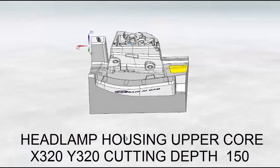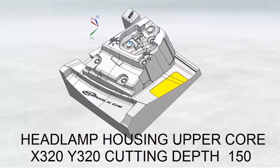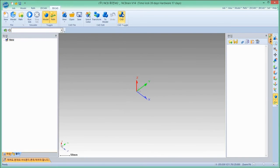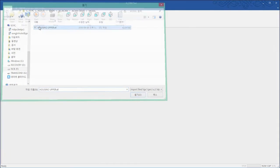This model is the headlamp housing upper core, which is a pair of the last model. First, activate AI Cam in NCBrain. Then, import a 3D modeling. There is a red box which shows the size of stock.